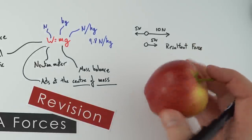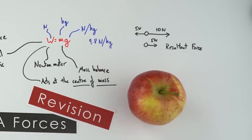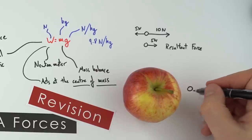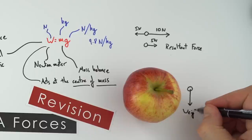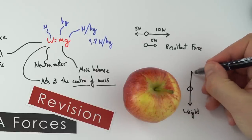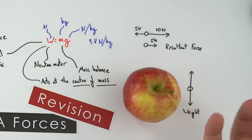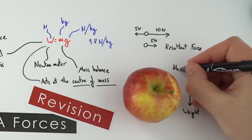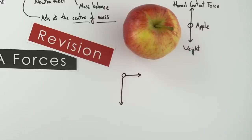Consider an apple sitting on a desk — it's not moving, so there's a balanced overall force. We can draw a free body diagram: there's a downward arrow representing the weight, and an equal-sized upward arrow in the opposite direction representing the desk pushing back. That upward force is what we call the normal contact force.